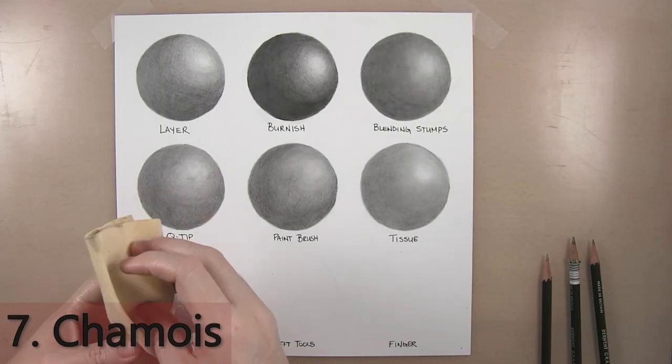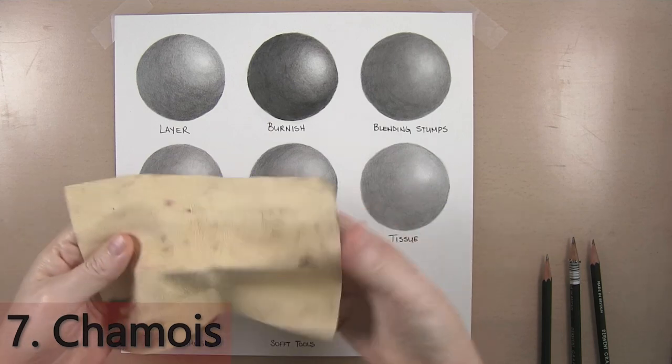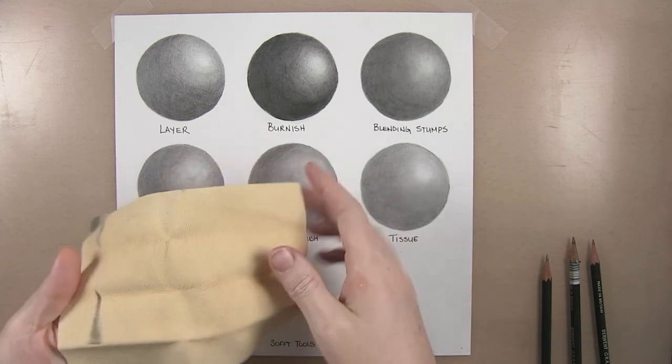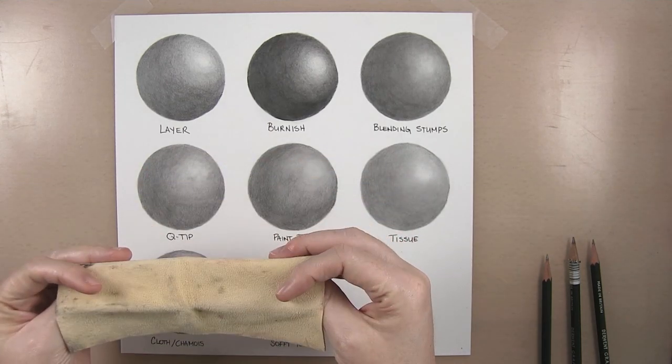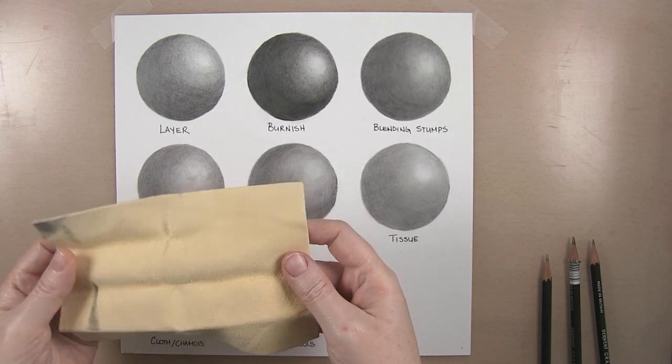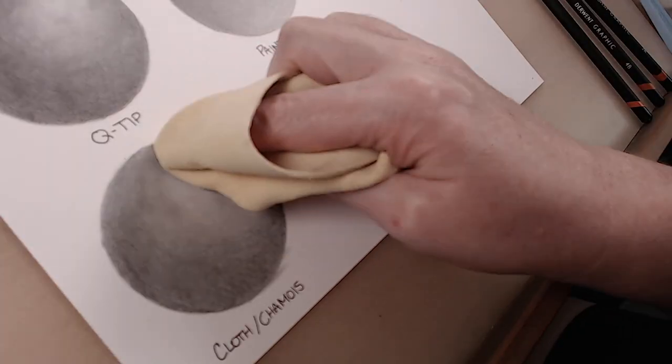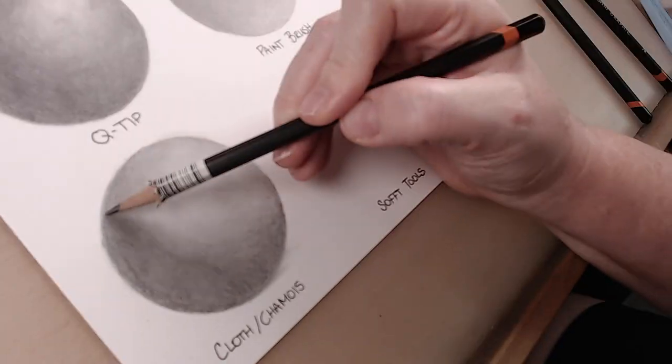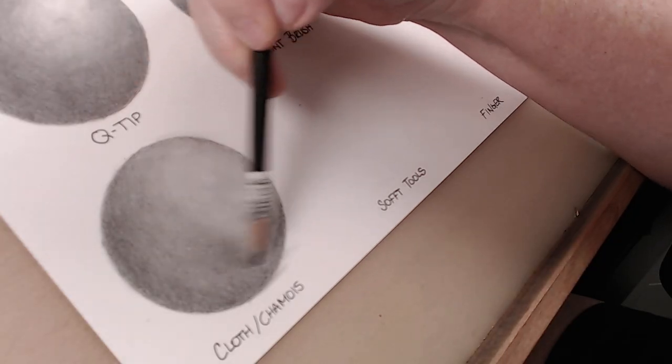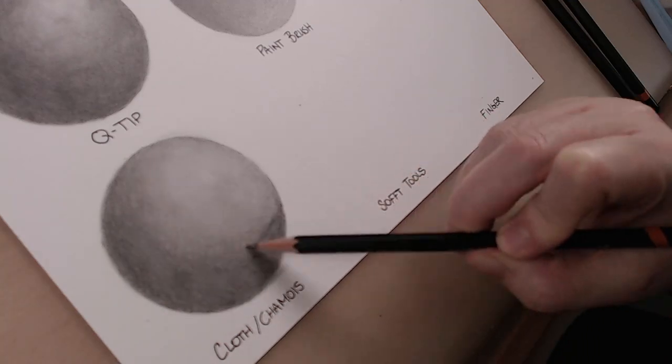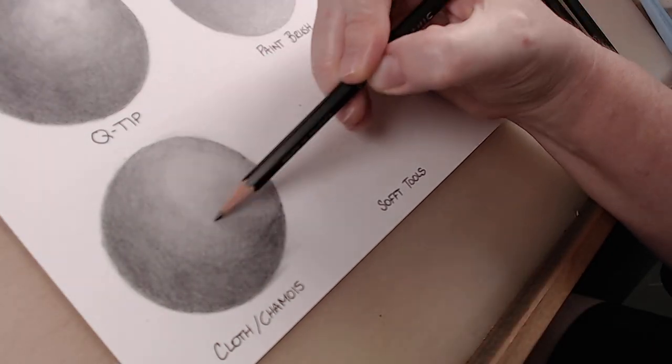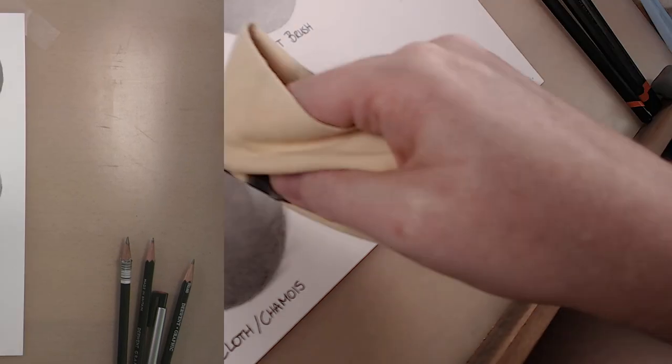Number seven is using a cloth or chamois. You can find chamois in your local art store. Much like the tissue you don't want a lot of texture and old soft t-shirts work great for this. You can use this in much the same manner as a tissue wrapping it around your finger and blending in circular or single directional motions until you get the blend you desire. The outcome is not as smooth as the tissue and it is difficult to keep that crisp edge.